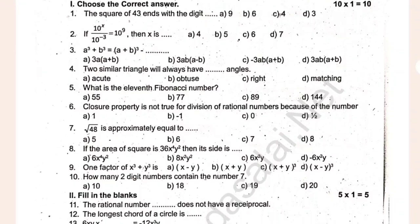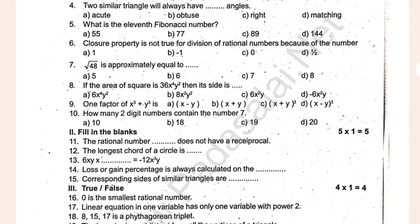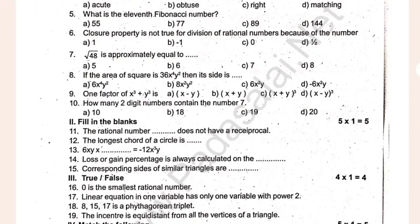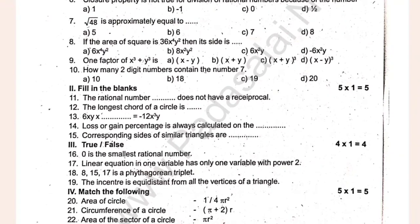What is the 11th Fibonacci number? The rational number dash does not have a reciprocal. The longest chord of a circle is. 6xy times x dash is equal to minus 12x cube y.